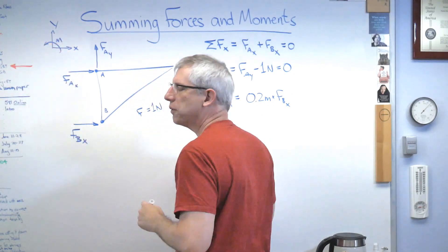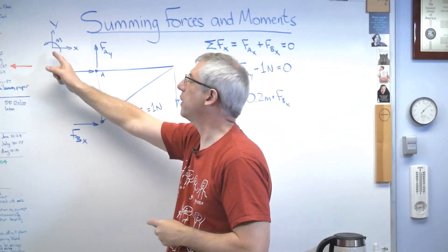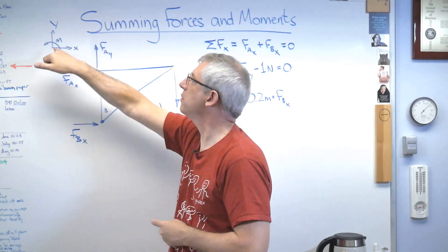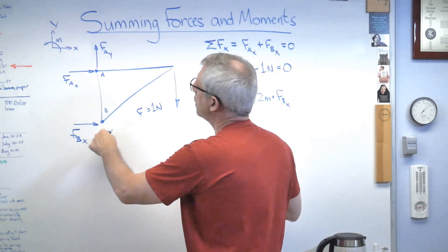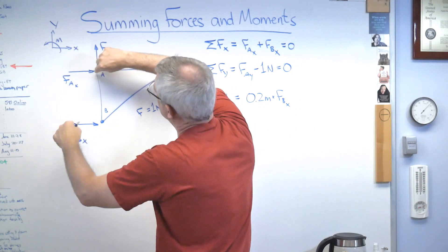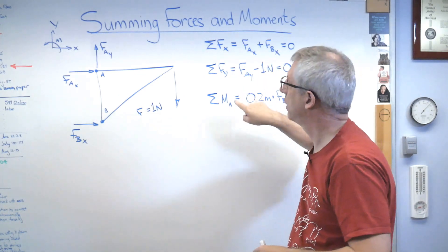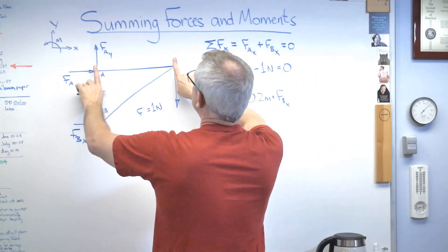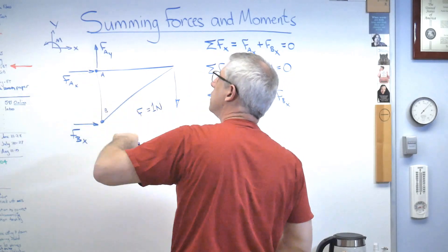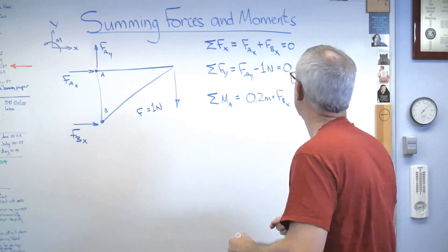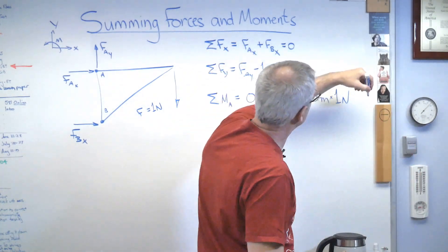Let's decide whether these moments are positive or negative. Using a right-handed coordinate system — rotating x into y, z comes out toward you — a counterclockwise moment is positive. FBx acting about point A wants to make the structure rotate counterclockwise, so that's positive. The 1 newton load acting at its distance about point A also wants to rotate the structure — but that's clockwise, so that's negative. The sum of moments about A equals zero.